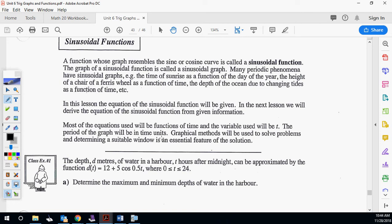Many periodic phenomena have these types of graphs: time of sunrise, the height of a chair on a ferris wheel, depth of ocean, changing of tides. Obviously, guys, since I lived in Hawaii last year, I was very aware of the tides and when they were coming in and out. So those things are all sine and cosine curves.